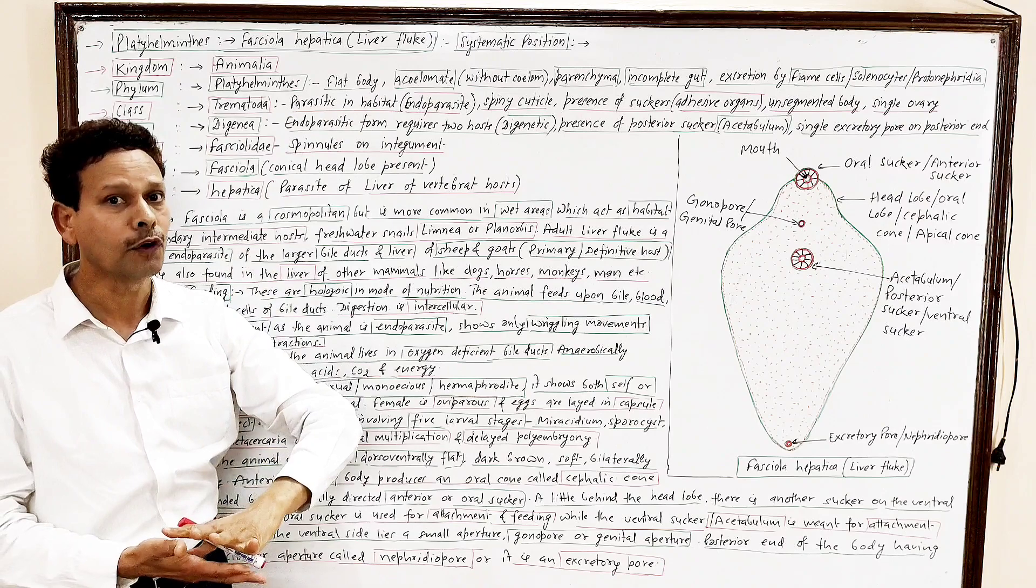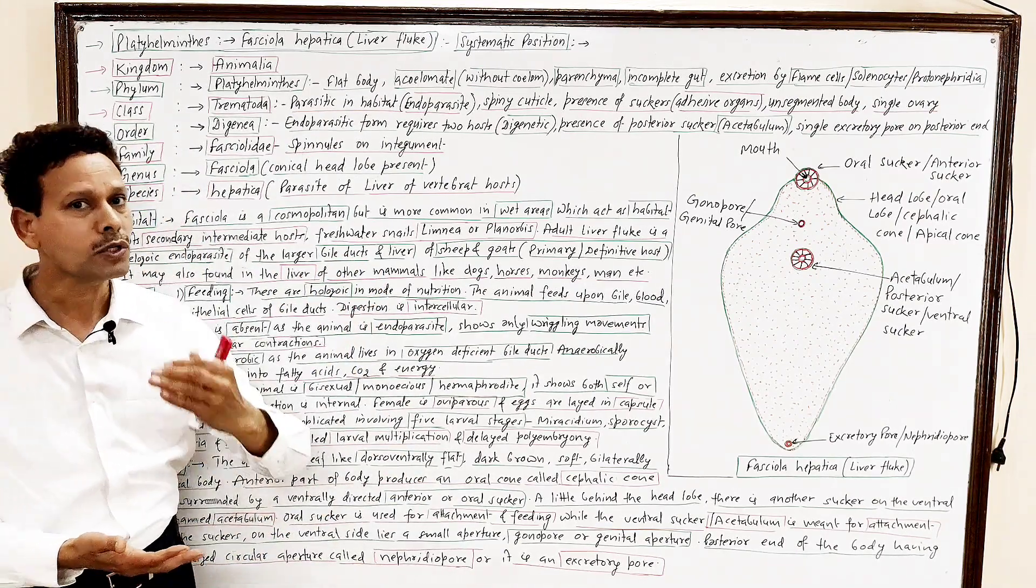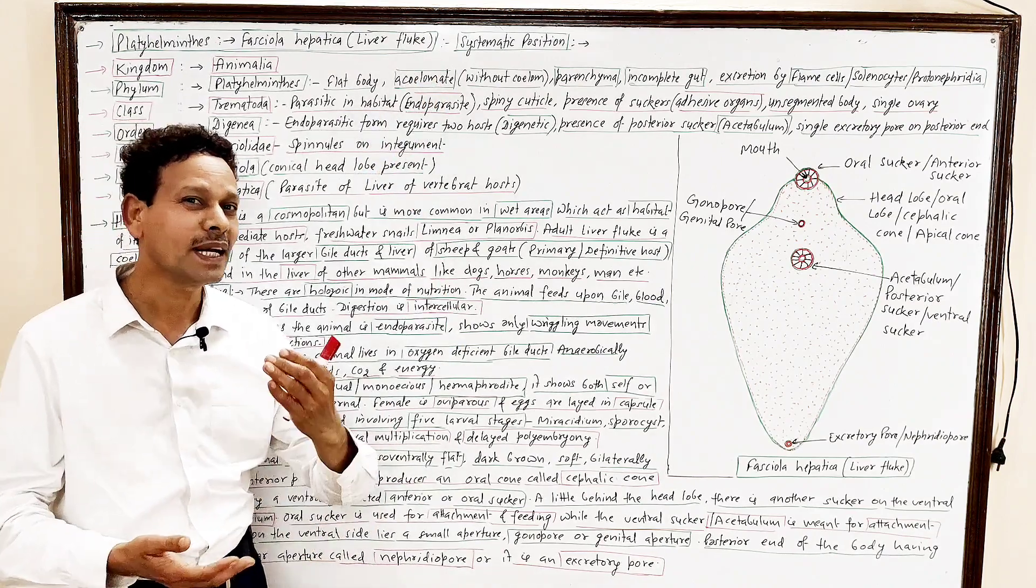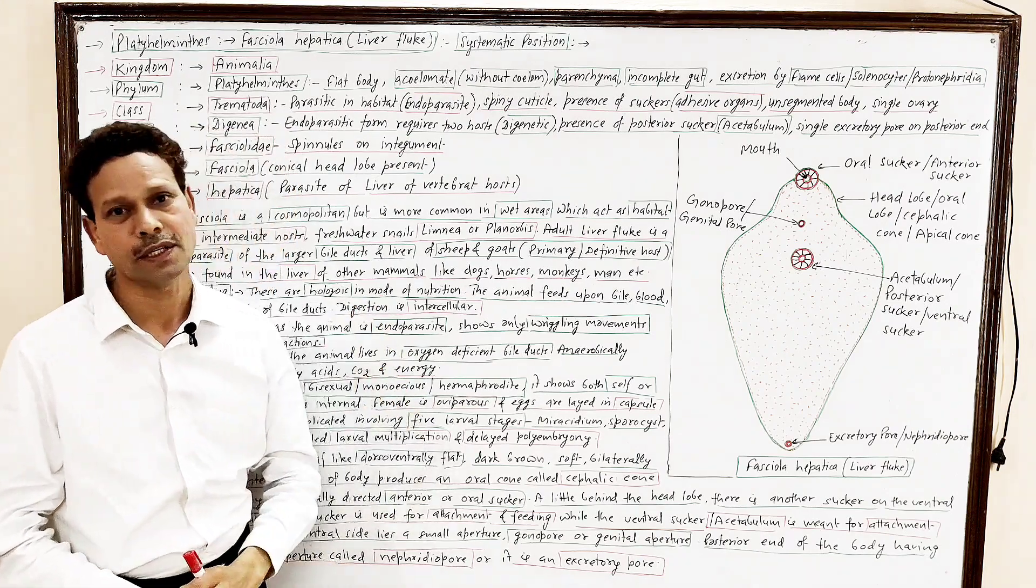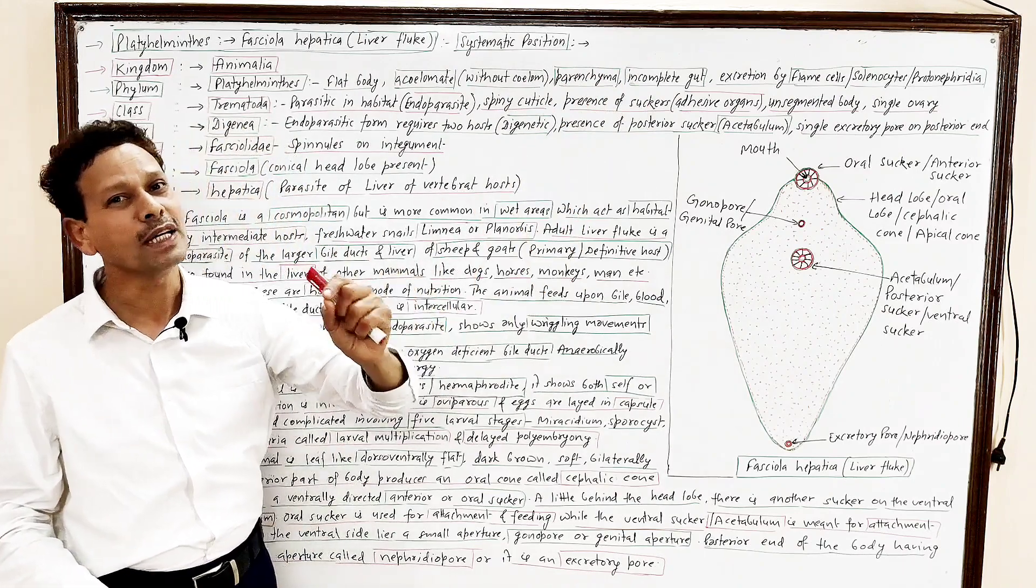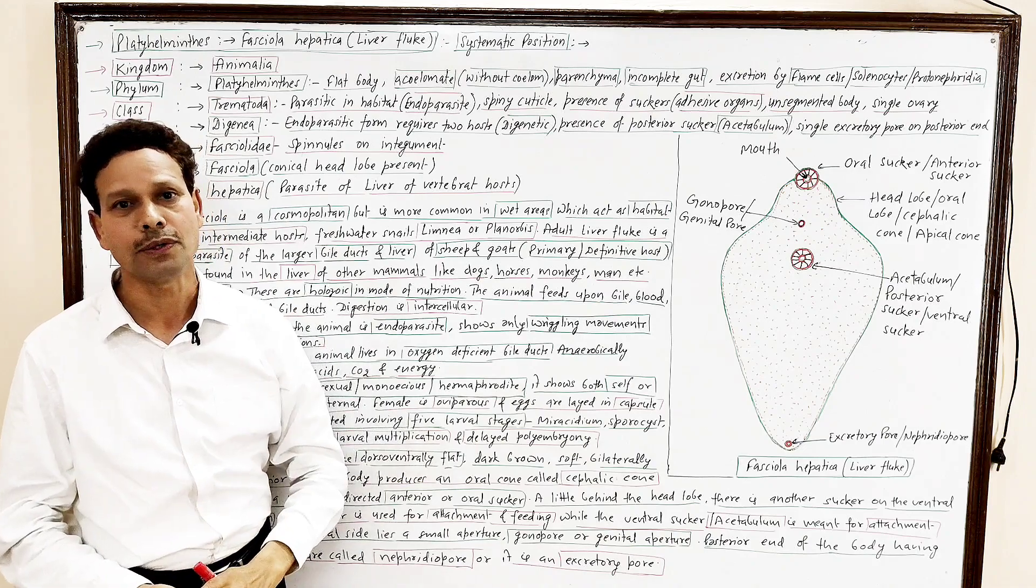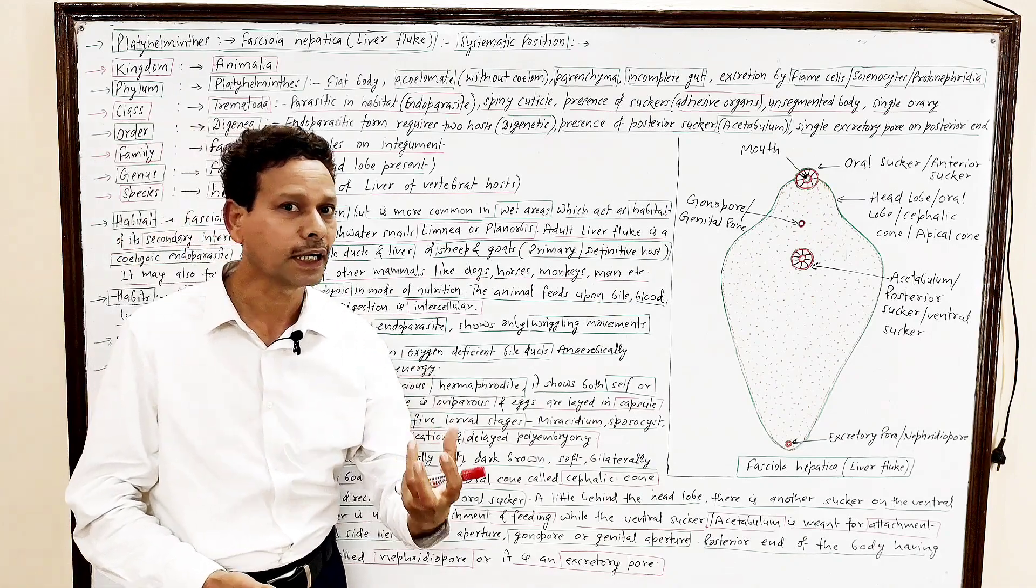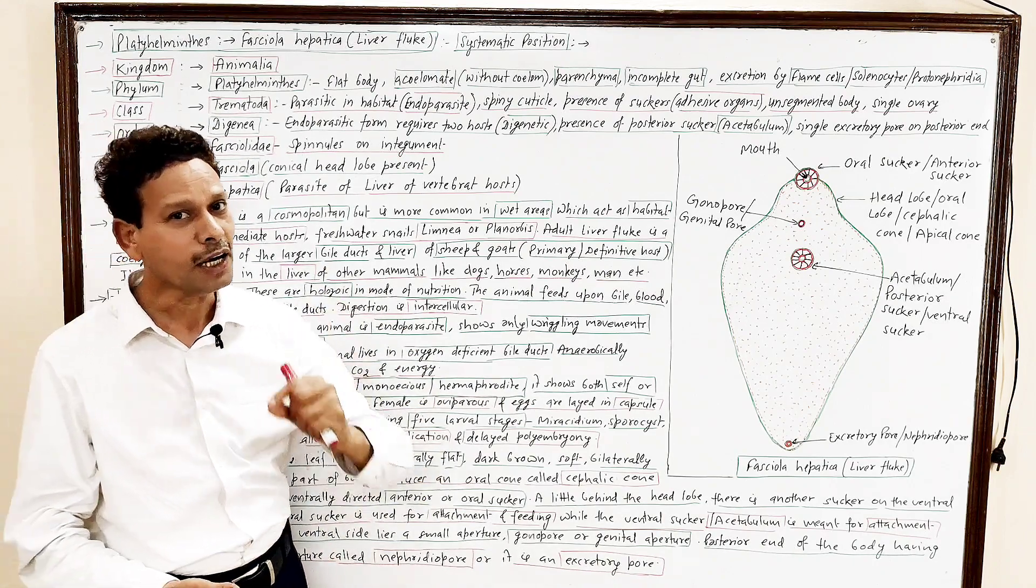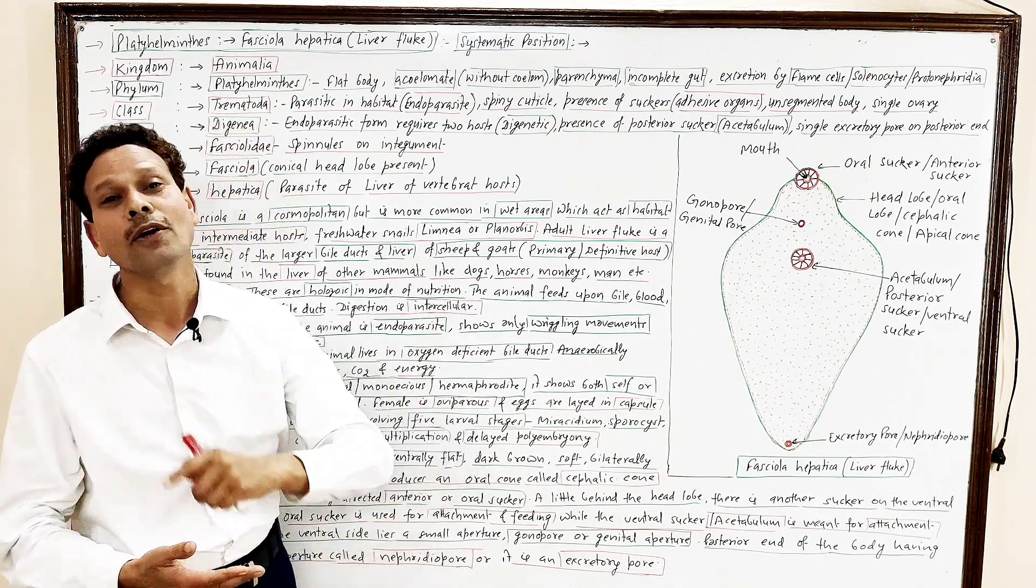These are flatworms. The body is flat, leaf-like, dorsal-ventrally flat body. Acoelomate. Their body without any coelom. These are acoelomates. Parenchyma, note down each and every point. Parenchyma is a special type of connective tissue, mesodermal in origin, and that parenchyma lies between the body wall and body organs.